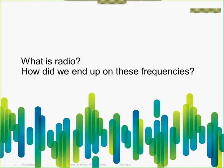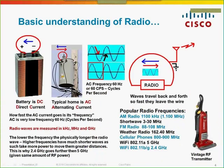So what exactly is radio? To understand what radio is, you really need to understand a little bit about electricity. There are two types of electricity: AC and DC. DC is direct current, meaning electricity flows from negative to positive in one direction only. Alternating current moves back and forth.